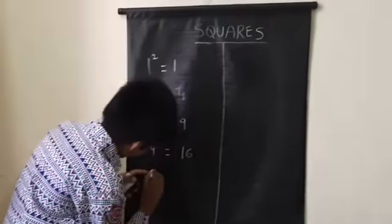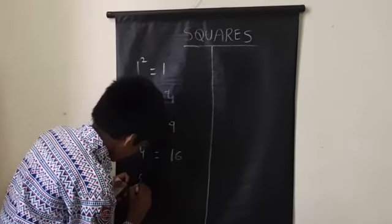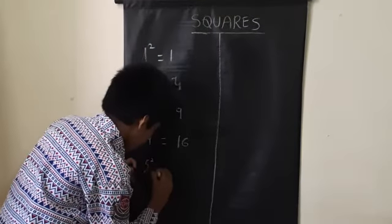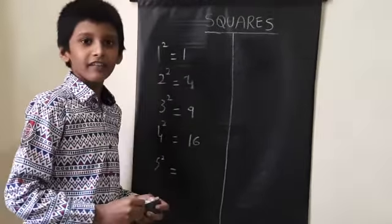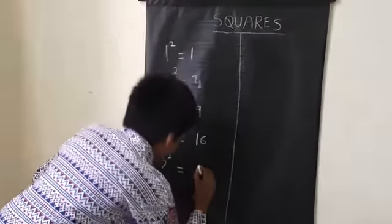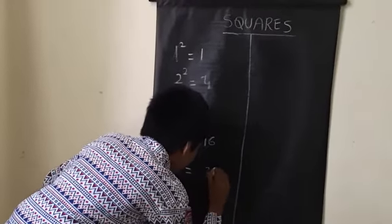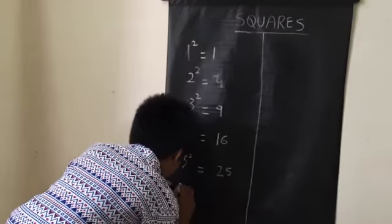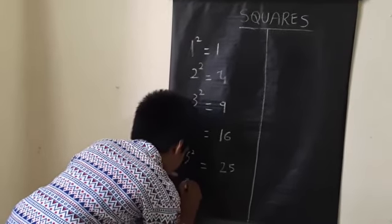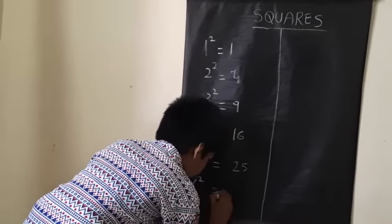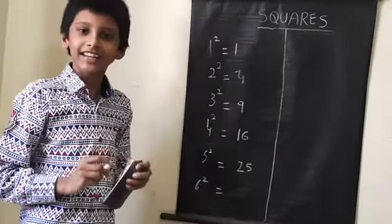Five square: five into five is twenty-five. Six square: six into six is thirty-six.